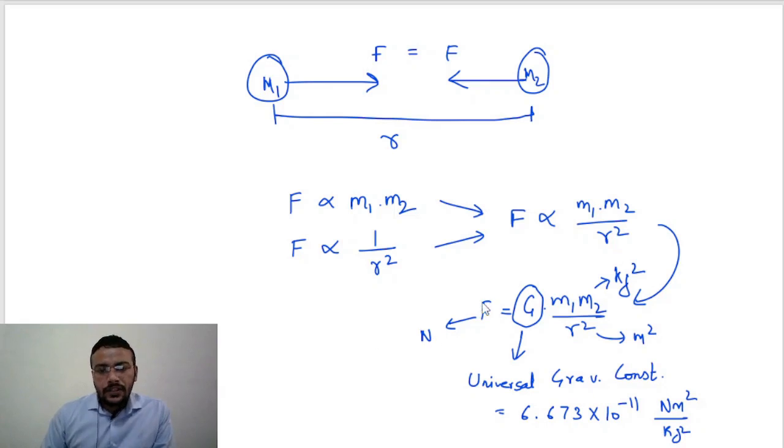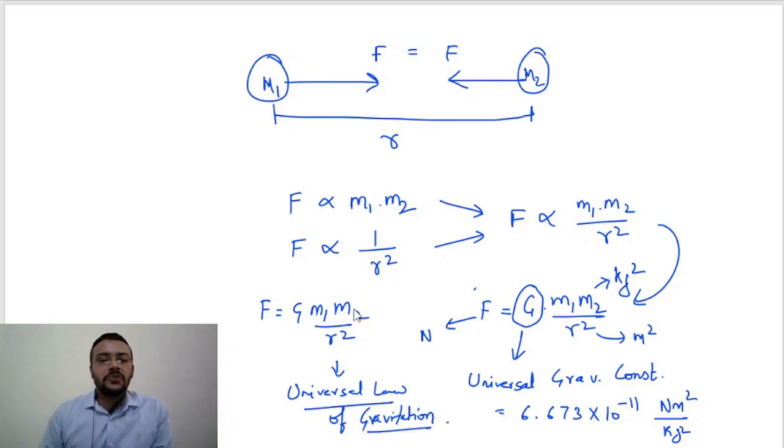So this equation, F equals G m1 m2 by r square, here this is nothing else, this is the universal law of gravitation, and it is given by Isaac Newton.